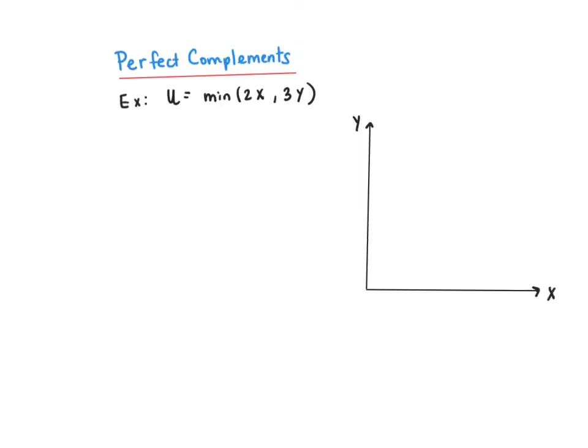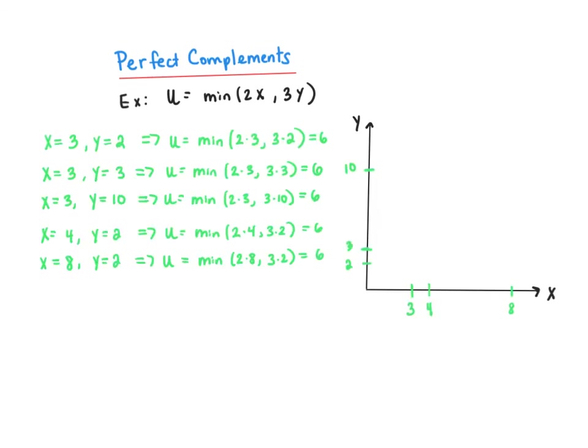Next, consider the example of a perfect complements utility function: u equals the min of 2x comma 3y. For perfect complement utility functions, neither of the strategies I showed for perfect substitutes will work. That's because both strategies involve taking the derivative of this utility function, and derivatives of a min function just don't exist. So what we'll do instead is plot some points.